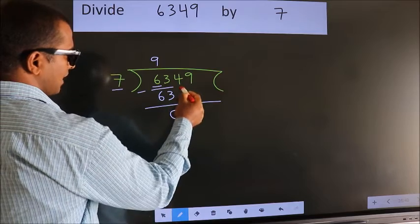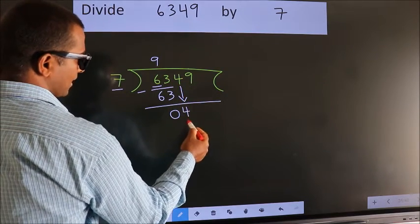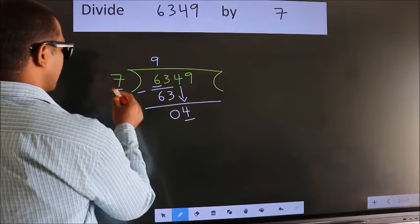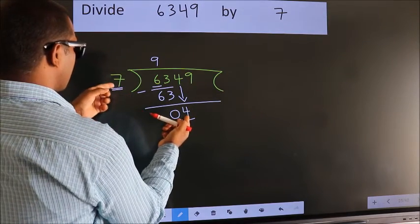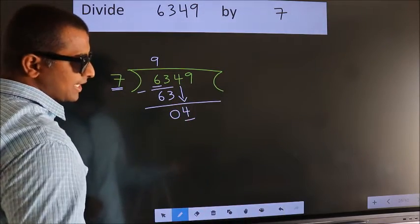After this, bring down the beside number. So, 4 down. Here we have 4, here 7. 4 smaller than 7, so we should bring down the second number.